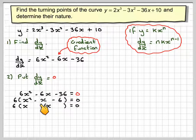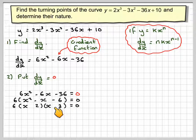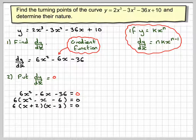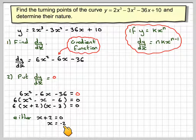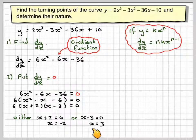Now we factorise x² - x - 6 = 0. We want factors that give -1 in the middle, so we try 2 and 3 since 3 - 2 = 1. We want one negative and one positive, giving (x + 2)(x - 3) = 0. So either x + 2 = 0, meaning x = -2, or x - 3 = 0, giving x = 3. We've now found the positions of these stationary points.